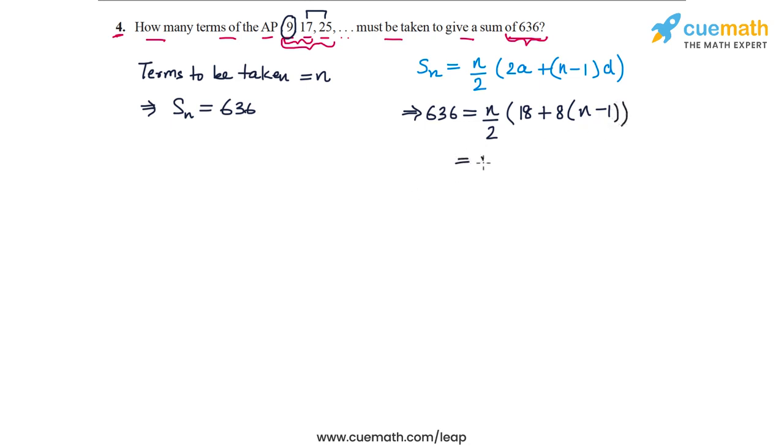If we simplify the right side, we get N by 2 into 18 plus 8N minus 8, which equals N by 2 into 8N plus 10. Dividing the bracket by 2, we get N into 4N plus 5. If I multiply N with the bracket, I get 4N square plus 5N.